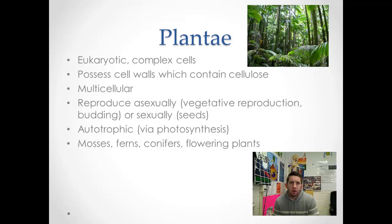Plants are still eukaryotic — complex cells with a cell wall made of cellulose. They're multicellular and can reproduce asexually through vegetative reproduction, where a part of the original plant can become an entirely new organism. They can also reproduce sexually using seeds and pollen. They're autotrophic and carry out photosynthesis in their chloroplasts. Different categories of plants include carophytes, mosses, ferns, conifers, and the angiosperms — the flowering plants.